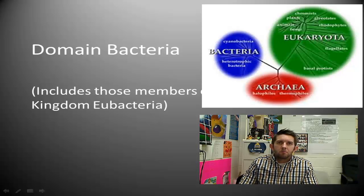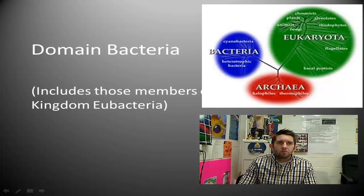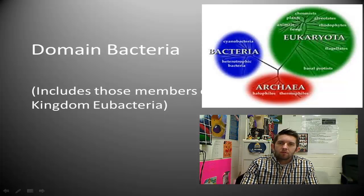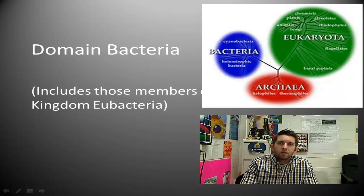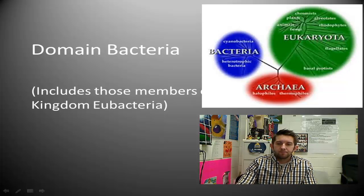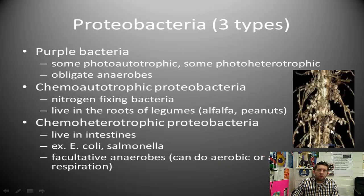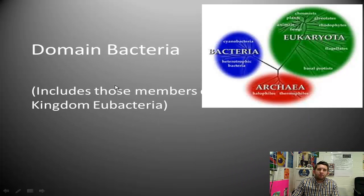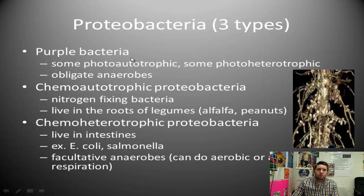Moving on through our systematics and taxonomy unit, we've come to the domain bacteria. We've already talked about the domain archaea — two of the three different domains into which all living things form, the other one being the eukaryota. The bacteria include all of those organisms within the kingdom eubacteria. We'll talk about five different groups within the domain bacteria, the first of which is the proteobacteria.